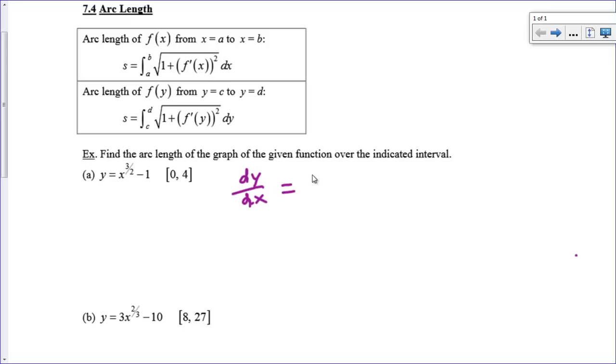So the derivative here in A is 3/2 x to the... and remember it's been a long time since we just took a derivative, you just subtract one from that exponent. So that's 3/2 x to the 1/2.